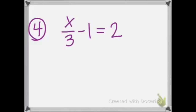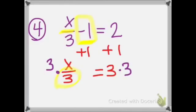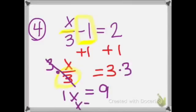Example 4 says x divided by 3 minus 1 equals 2. This is a small fraction, so we will not start by clearing the fraction. We start by adding or subtracting the term without the variable. The opposite of minus 1 is plus 1, so we bring down x divided by 3, and 0 equals 3. The last step: multiply or divide the number with the variable. The opposite of divide by 3 is multiply by 3. Multiply both sides by 3: 3 divided by 3 is 1x, equals 3 times 3 is 9. So x equals 9.